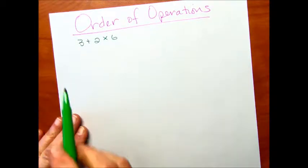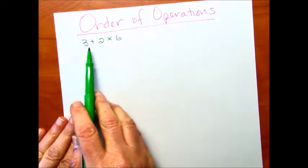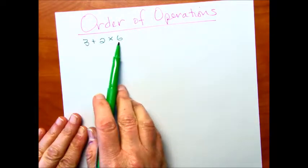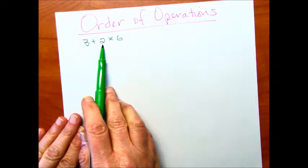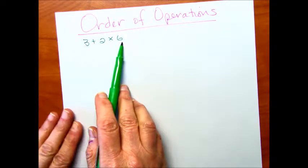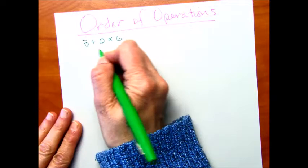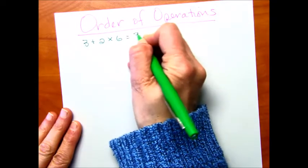For instance, if I were to look at this problem here, you might think, well, I'm just going to go left to right. 3 plus 2 is 5, and 5 times 6 is going to be 30. So you might get 30.